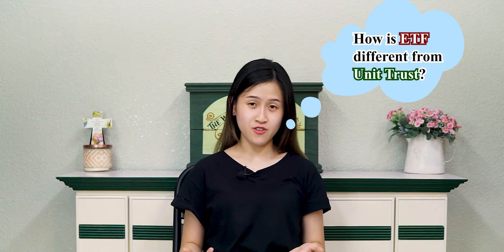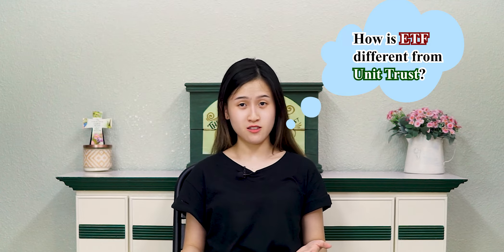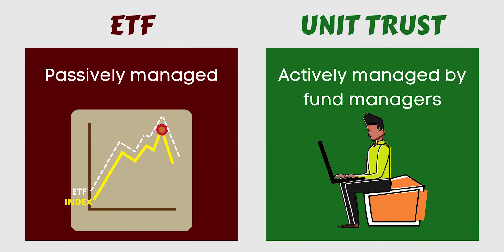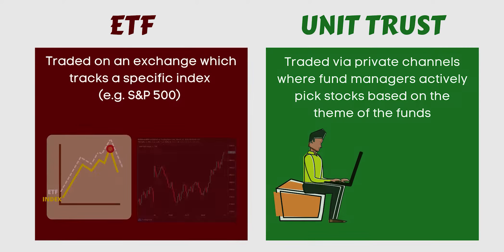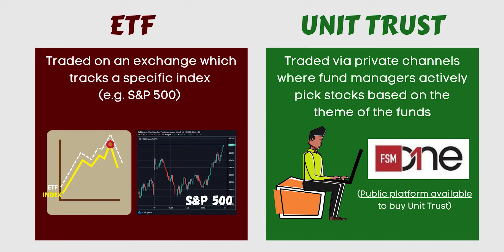You may be wondering, how is ETF different from Unit Trust? ETF is generally passively managed while Unit Trust is actively managed by a fund manager. ETFs are traded on an exchange where they are constructed to track a specific index, for example the S&P 500, while Unit Trusts are traded via private channels, whereby fund managers actively pick stocks based on the theme of the fund.